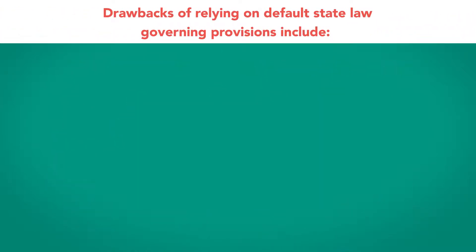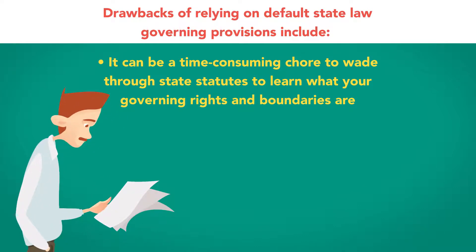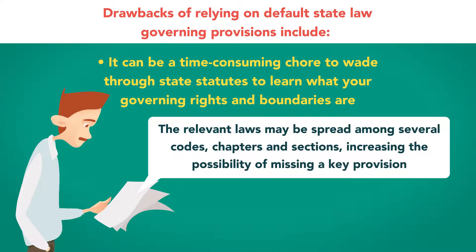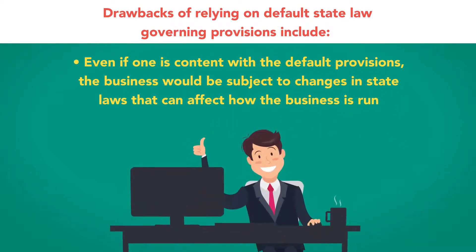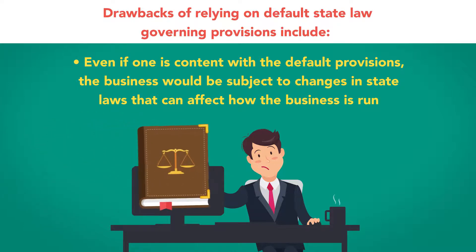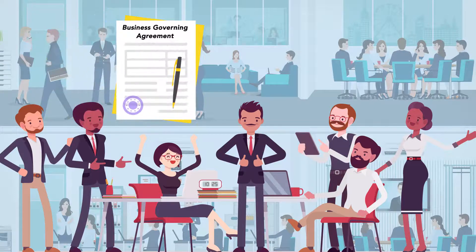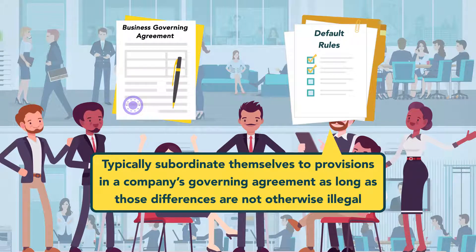Potential drawbacks of relying on default state law governing provisions include: it can be time-consuming to wade through state statutes to learn your governing rights and boundaries; relevant laws may be spread among several codes, chapters, and sections, increasing the possibility of missing a key provision; a company may be forced to adopt management practices it does not want; and even if content with the default provisions, the business would be subject to changes in state laws. A company that seeks to retain maximum control and flexibility should put its own governing agreement in place. State default laws typically subordinate themselves to provisions in the company's governing agreement, as long as those provisions are not illegal.